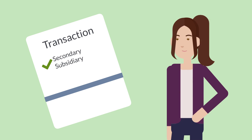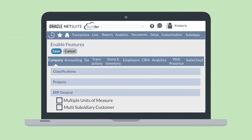One main benefit from connecting transactions with the appropriate subsidiary is increased accuracy in transaction and subsidiary reporting. To set up this feature, you just need to turn it on in Enable Features and associate the appropriate subsidiaries on customer records. You can enable this feature on the ERP General section of the Company tab in Enable Features.